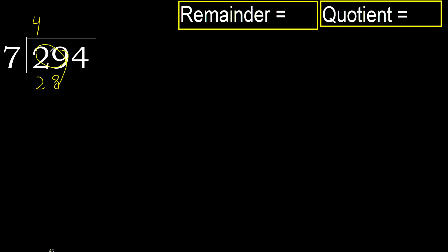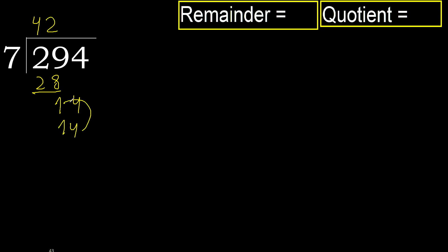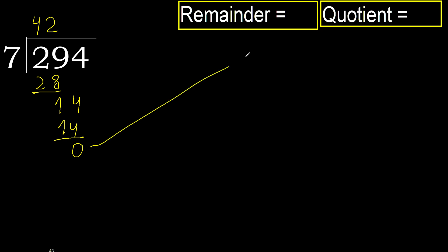Subtract: 29 minus 28 is 1. Bring down next: 14. 7 multiplied by 3 is greater, multiplied by 2 — 14 — is not greater. Subtract: 14 minus 14 is 0, no remainder. Therefore finish it.